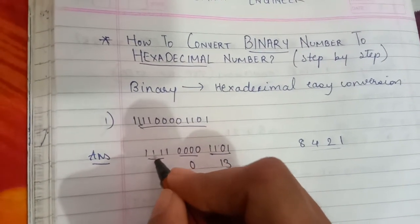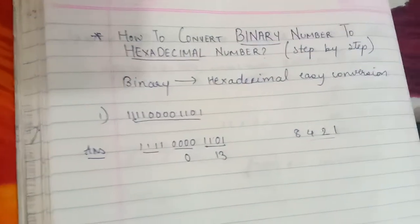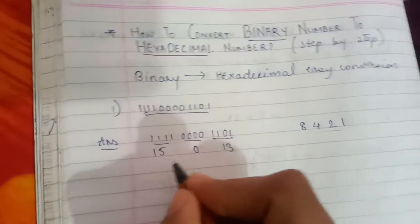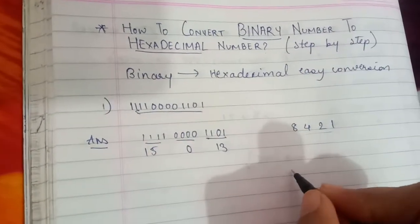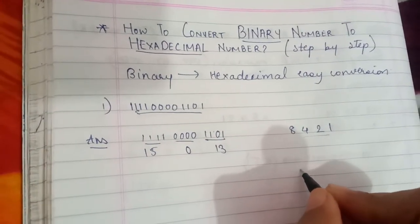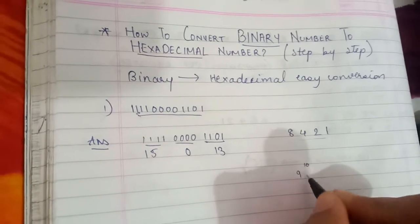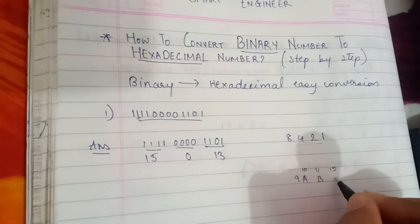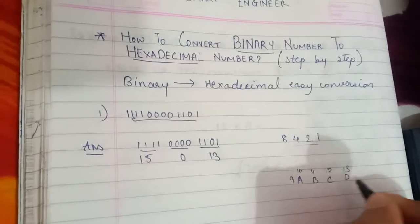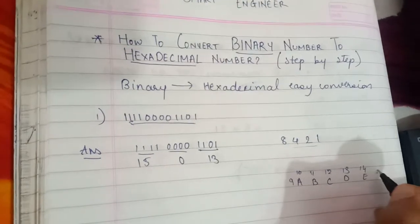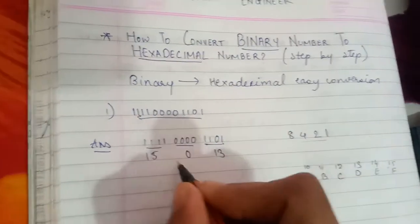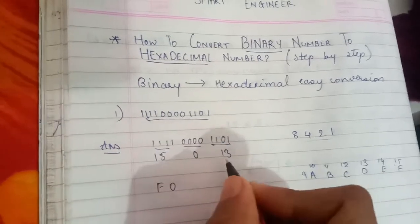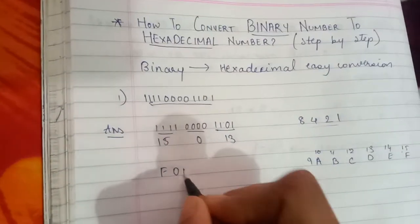For the last group (1 1 1 1): 1 plus 2 is 3, 3 plus 4 is 7, and 7 plus 8 is 15. Now, after 9, hexadecimal uses letters — 10 is A, 11 is B, 12 is C, 13 is D, 14 is E, and 15 is F. So we write F for 15, 0 for zero, and D for 13.